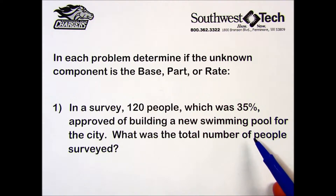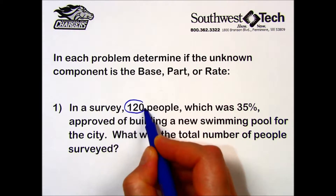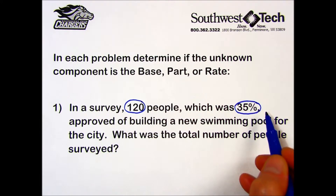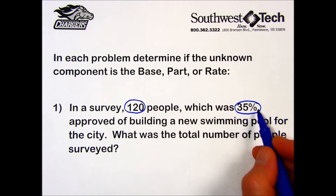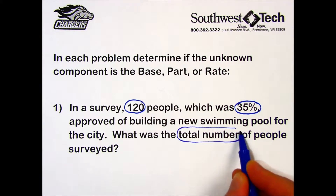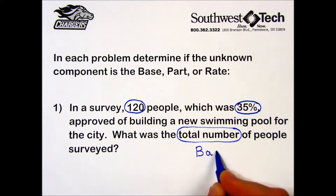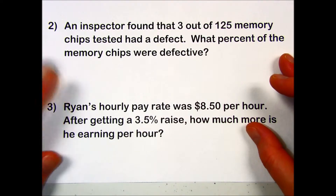What was the total number of people surveyed? 120 people was 35 percent of some larger number, so 120 is the part, 35 percent is the rate, and the total number of people is our base — that's our unknown that we would look for.